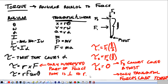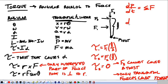For Newton's first law: the angular velocity of an object remains constant if the net torque is zero. The second law: torque equals I alpha. The third law: for every torque there is an equal and opposite torque. Also, the change in angular momentum over time equals the net torque. If the net torque is zero, angular momentum is conserved.